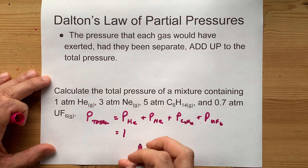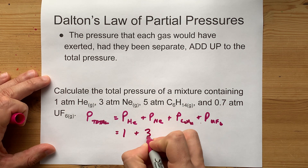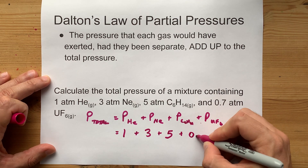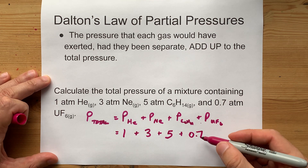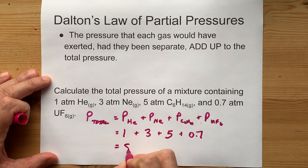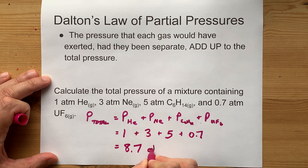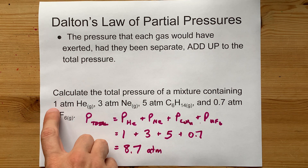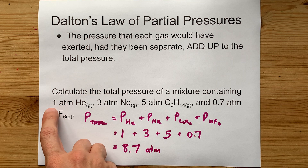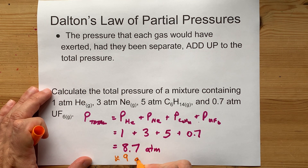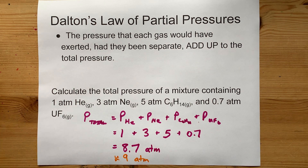For example, one atmosphere of helium and three of neon and five of hexane and 0.7 of uranium hexafluoride — it doesn't matter what they are — gives you the total pressure of the mixture of those four things. This is 8.7 atmospheres. If you're going to use sig figs, you'd say 7 atm, but that's neither here nor there.